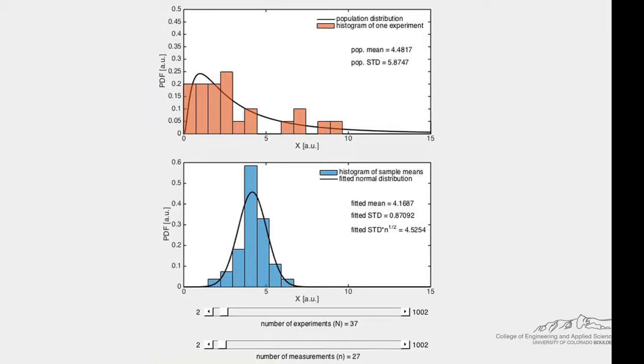The central limit theorem says that these sample means will be normally distributed with a mean equal to the population mean and a standard deviation equal to the population standard deviation divided by the square root of the number of measurements. This will be true if the number of measurements is approximately greater than 30.